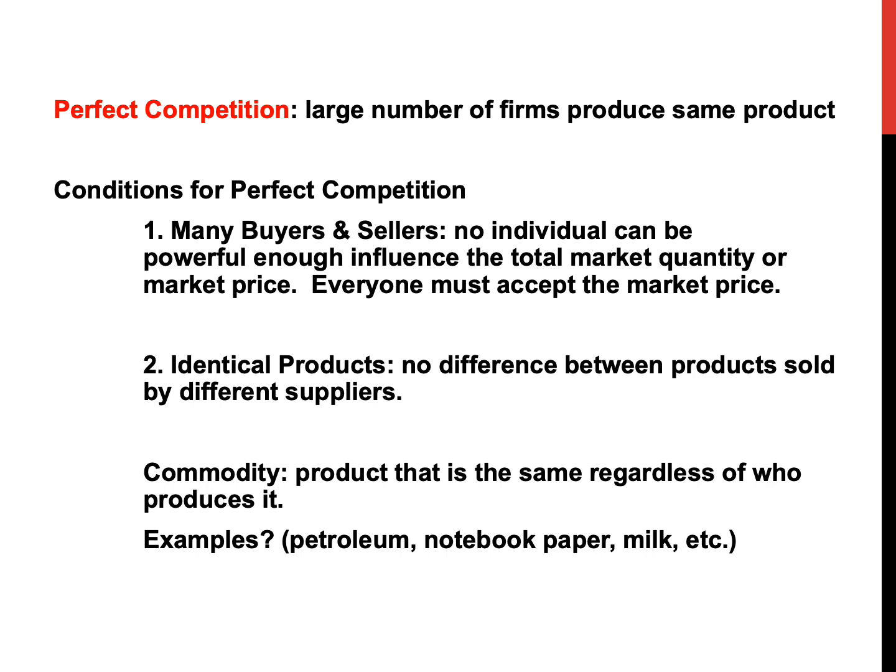The first kind of market we're going to look at is a perfectly competitive market. Perfect competition is an arrangement in which there are large numbers of firms that produce the same product. How do I know if I'm in a perfectly competitive market? We're going to look at four qualifications. Number one, there have to be many buyers and sellers — thousands, tens of thousands — so that no individual is powerful enough to influence the total market quantity or the market price. Therefore, everyone must accept the price. They are price takers.